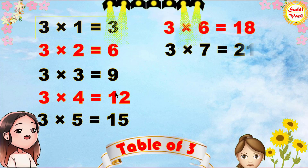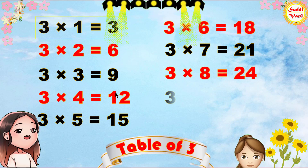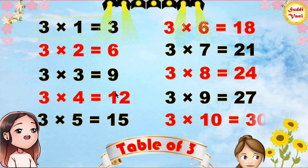3 7s are 21, 3 8s are 24, 3 9s are 27, 3 10s are 30.